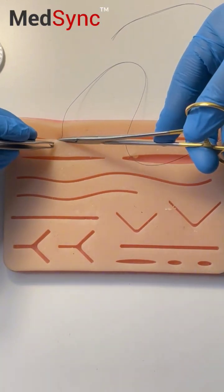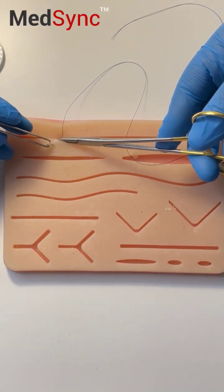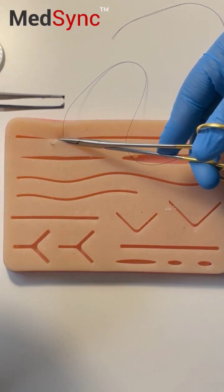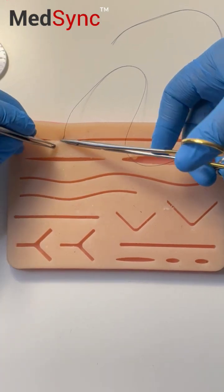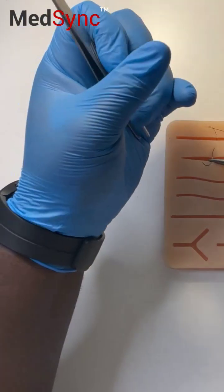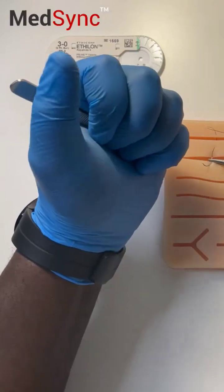Rotate your wrist. Mount the needle between the teeth of the forceps. Mount it straight away and palm your forceps right here.